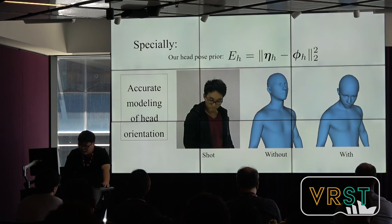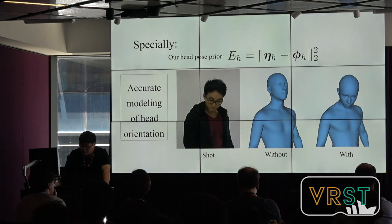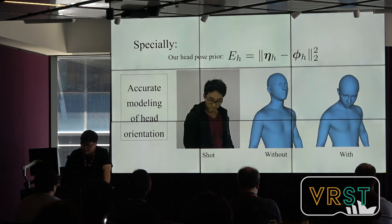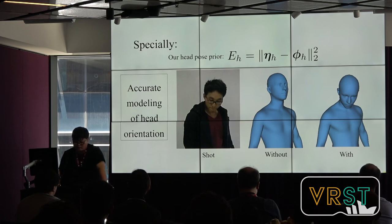For our proposed hand pose term, the pose estimated by Kinect is taken to constrain the hand pose of the model. Here, phi-H is the hand pose estimated from the point cloud, while eta-H is the hand pose estimated by Kinect. Phi-H can be computed through three key points, which are manually specified and fixed for all inputs. As shown in the example, the hand pose constraint can help obtain a correct hand pose result.